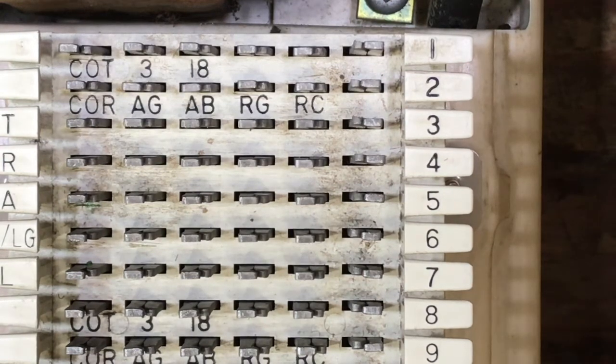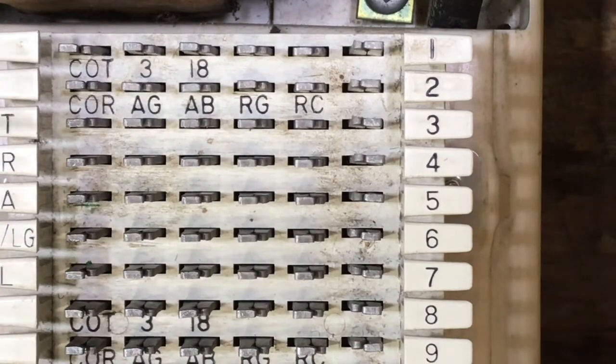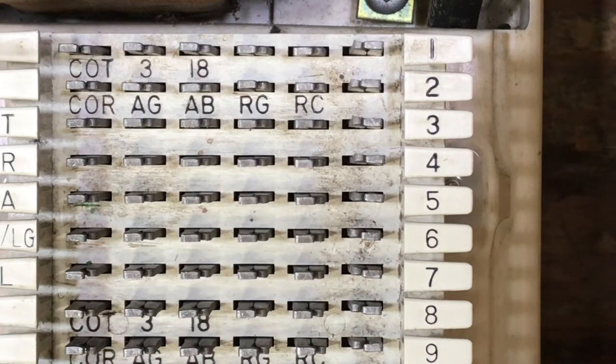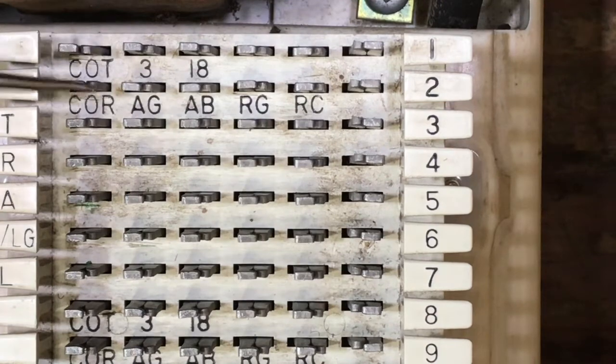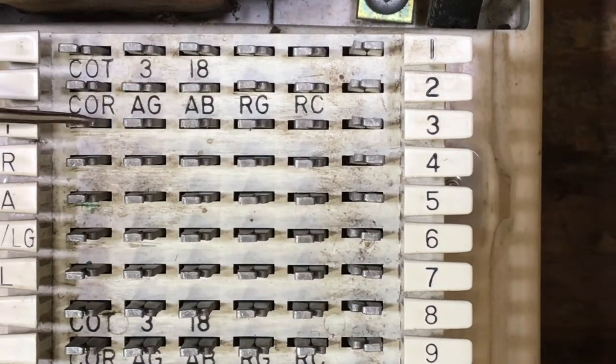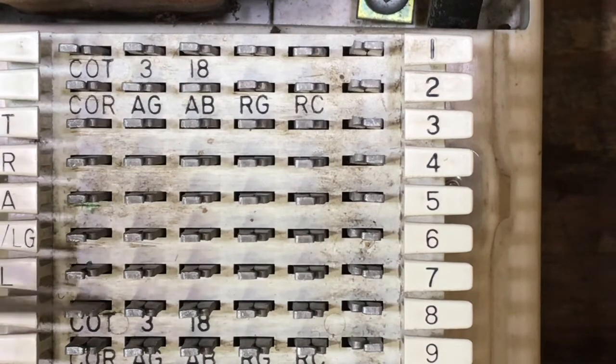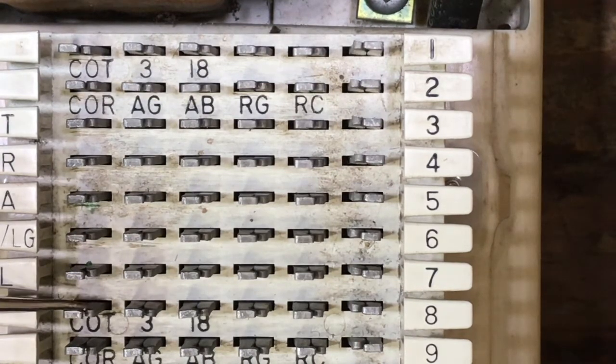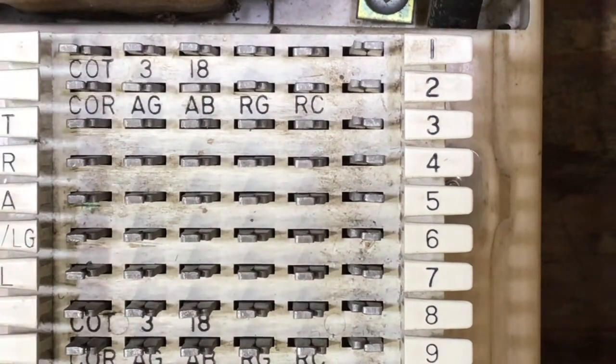The ITT KS601's was really intended to have one 25 pair cable brought into it, or maybe two if you were utilizing the intercom, and you would connect up the CO tip and ring in white blue, blue white, and then the station tip and ring in white orange, orange white, white green, green white, white brown, brown white, and then the white slate would connect to the ring ground and ring common of line one.